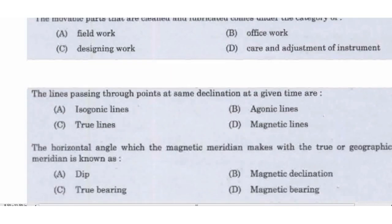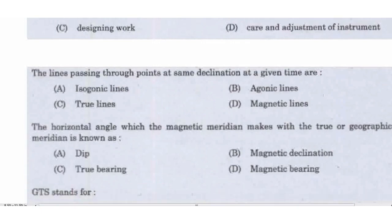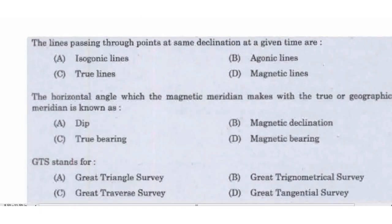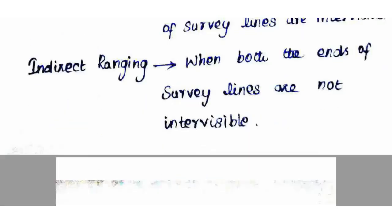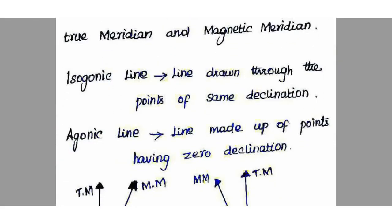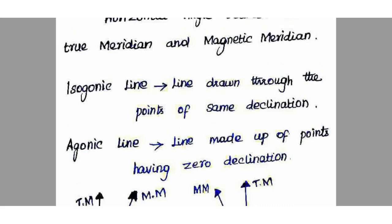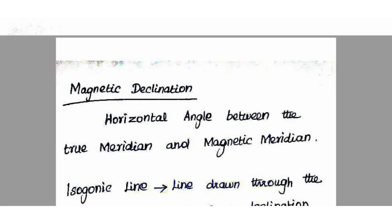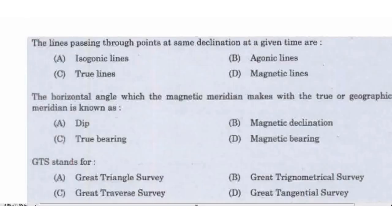Lines passing through points of the same declination at a given time are called isogonic lines. The right answer is isogonic lines. An agonic line is a line made up of points with zero declination.